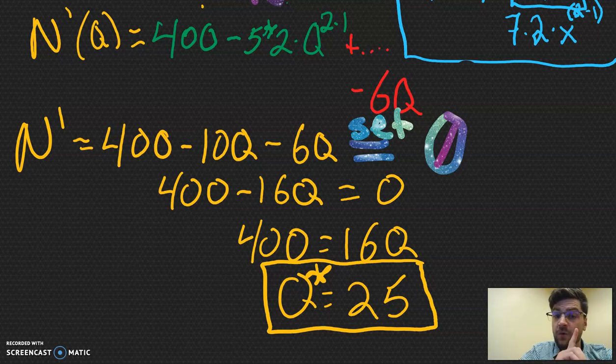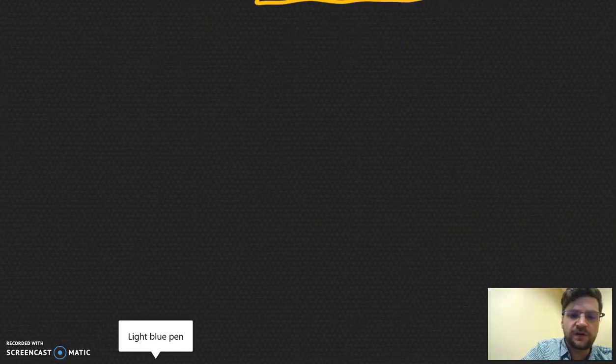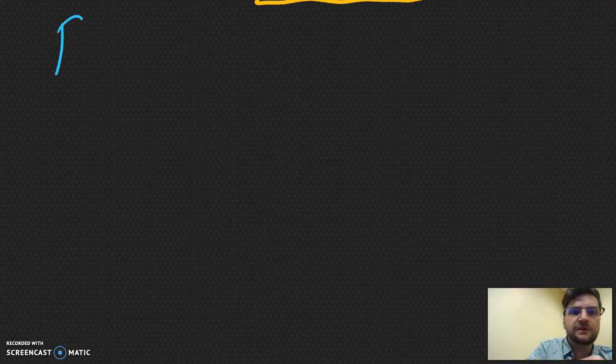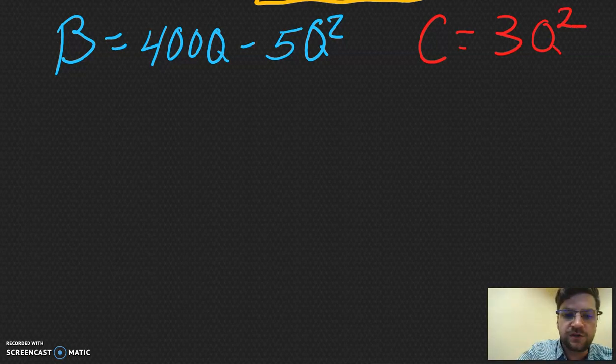What's the easy way, Chris? I'm so glad you asked. So let's go ahead and let's start fresh. What did we start with? We started with a benefit equation that was 400Q minus 5Q squared. We had a cost equation that was 3Q squared. So here's what we can do.